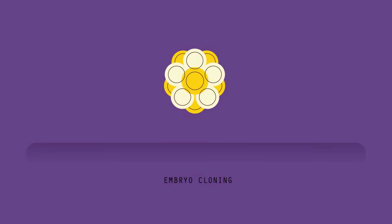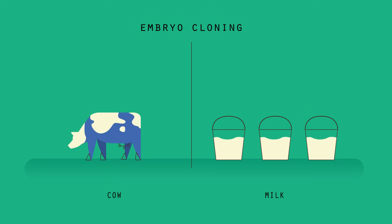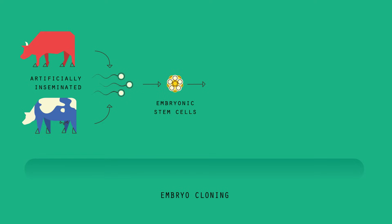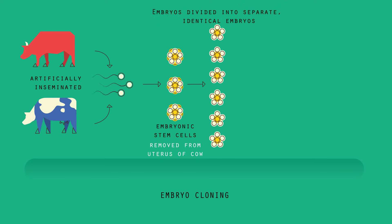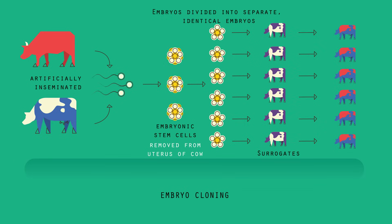The first is called embryo cloning. A farmer might have a cow that gives a lot of milk and wants to use her to create many calves. The cow is artificially inseminated using the sperm of a bull. The embryos grow until they form a ball of embryonic stem cells. Before they become specialized, the embryos are removed from the uterus, divided up into separate embryos, which will all have the same DNA. Then each is placed into the womb of a different cow. These cows are surrogate cows, just being used to grow the embryos until they are born. The calves will be clones of each other, but not a clone of the mother due to the bull's sperm.